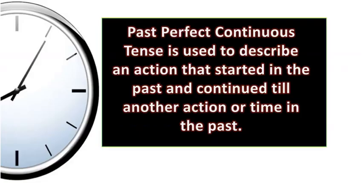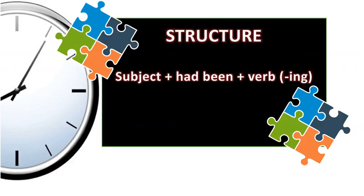Past perfect continuous. This tense is used to describe an action that started in the past and continued until another action or time in the past. The structure is subject plus had been plus the verb ending in -ing.